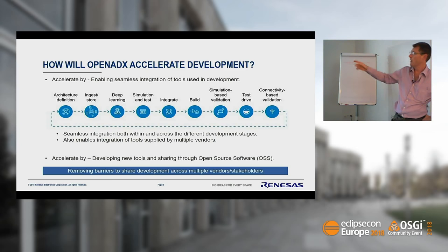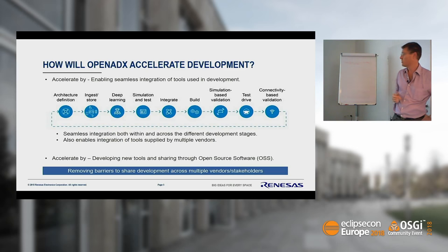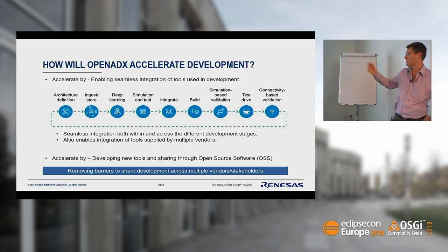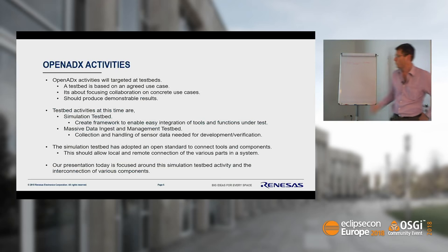Another part of this acceleration is open source. We want to create open-source software and share it within this ecosystem, really about removing the barriers to sharing development across multiple vendors and stakeholders to accelerate the autonomous driving vision.